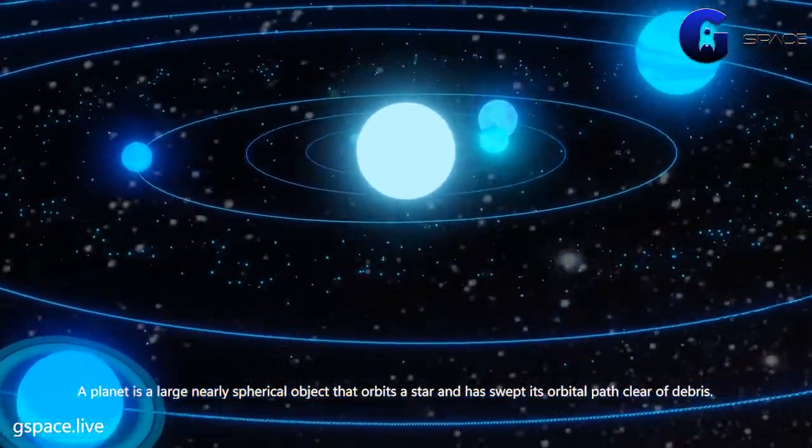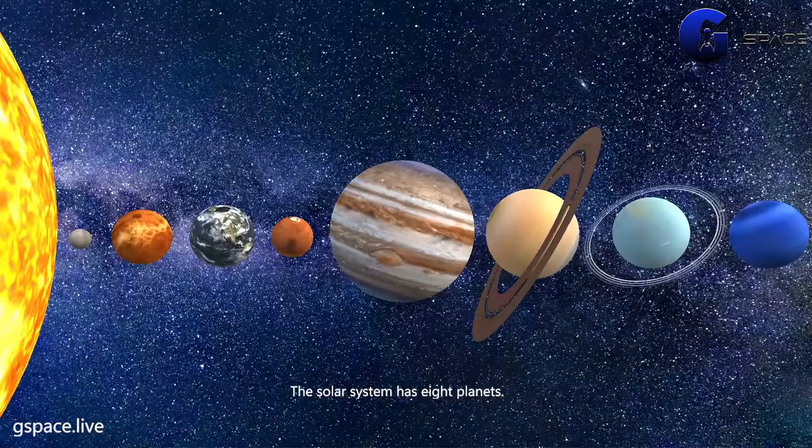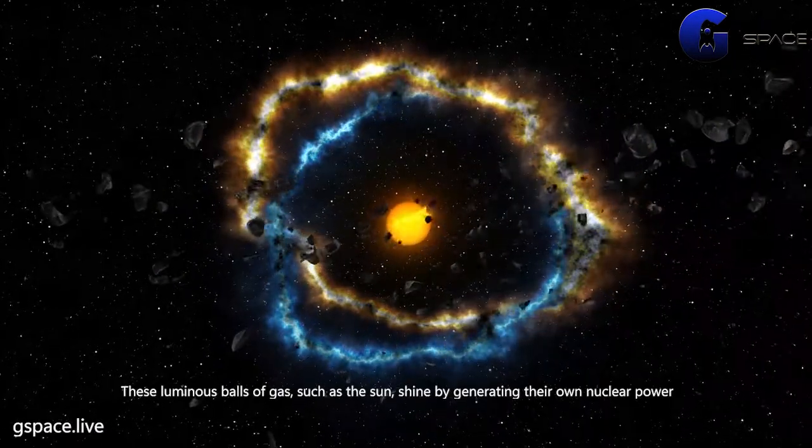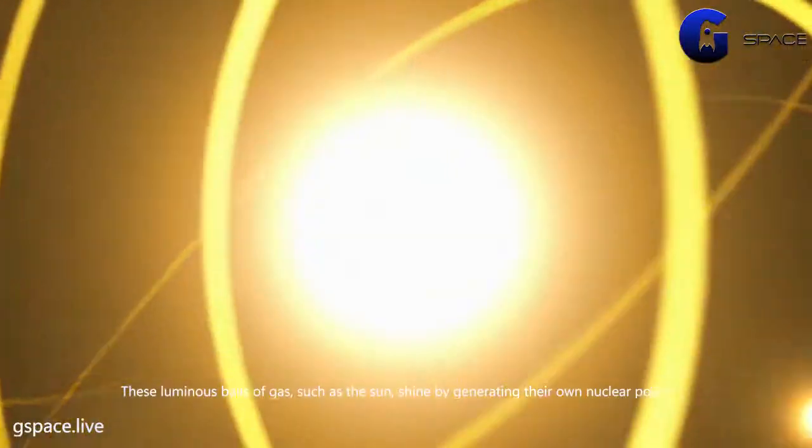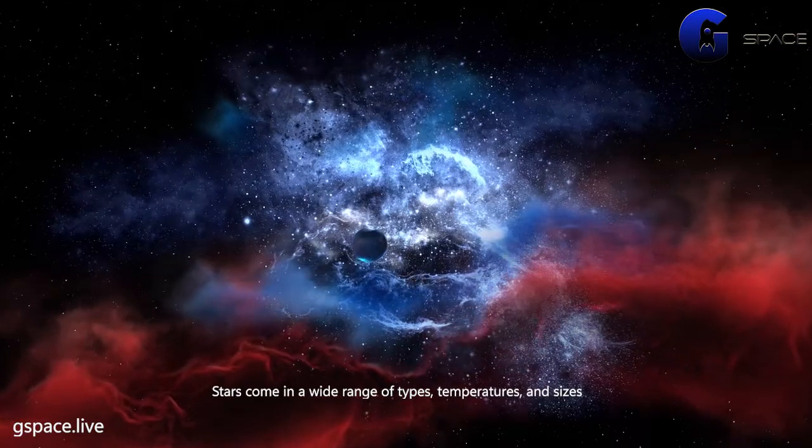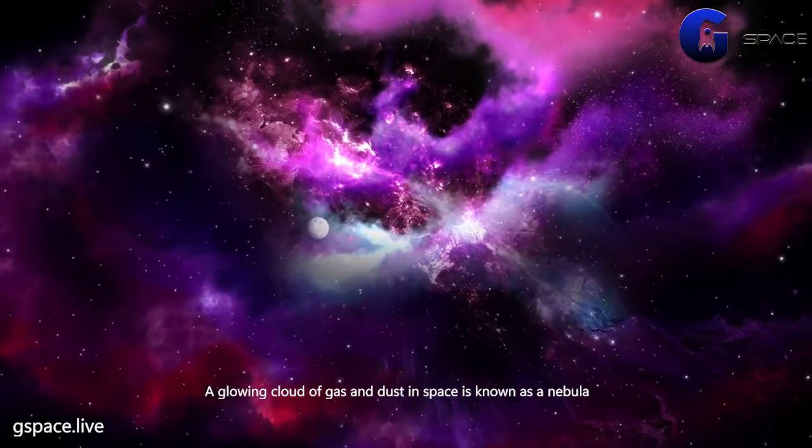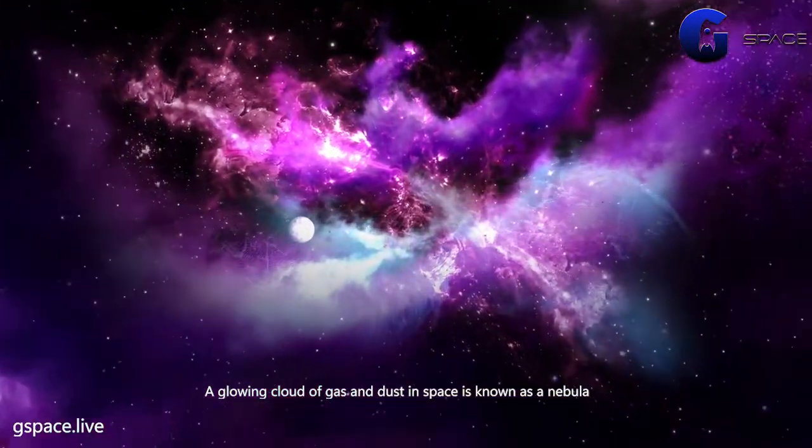Planet: a planet is a large, nearly spherical object that orbits a star and has swept its orbital path clear of debris. The solar system has eight planets. Stars - these luminous balls of gas, such as the sun, shine by generating their own nuclear power. Stars come in a wide range of types, temperatures, and sizes.